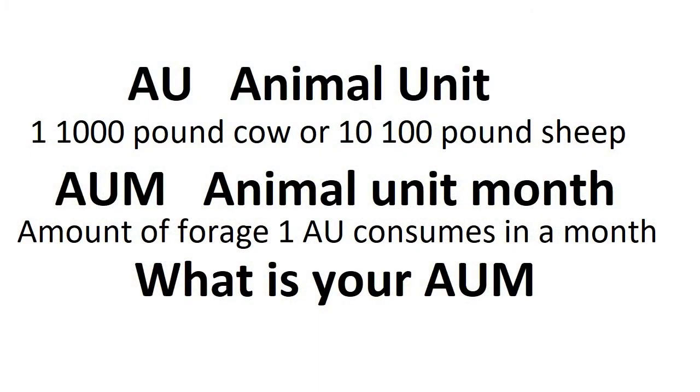First, two things we have to go through: AU and AUM — what do those mean? AU is an Animal Unit, which is 1,000 pounds of animal. I don't care if it's one 1,000-pound cow or ten 100-pound sheep — it's a thousand pounds of animal, that's an animal unit. AUM is Animal Unit Month — that is the amount of forage one animal unit will consume in a month. It gets a little complicated. I had a hard time with animal unit month — the forage that an animal unit consumed in a month on the pasture — until I saw something that related it to hay.